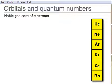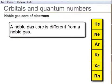The reason for this section is to make one point: a noble gas core of electrons and a noble gas are quite different.